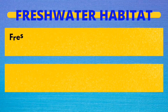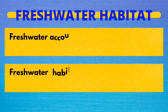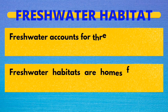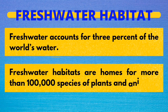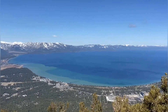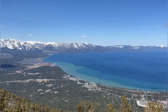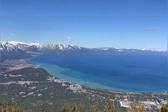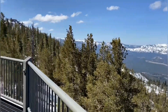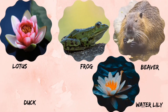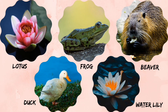Around 3% of the total earth's water is fresh. Freshwater habitats are home to more than 100,000 species of plants and animals. Rivers, lakes, streams, and ponds are examples of freshwater habitat. Lotus, water lily, duck, beavers, and frog are found in freshwater habitat.